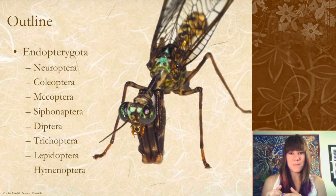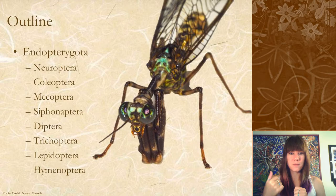We're first going to talk about the net-winged insects, then beetles, earwig flies, hanging flies, scorpion flies, fleas, true flies, caddisflies, butterflies and moths, and then your wasps, bees, and ants.